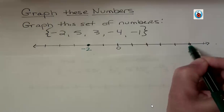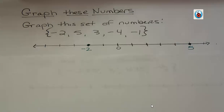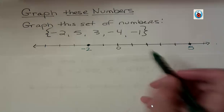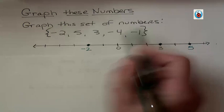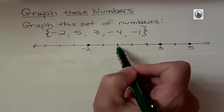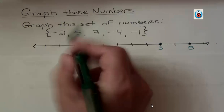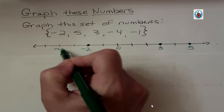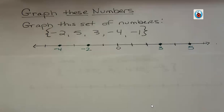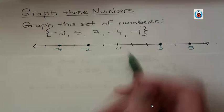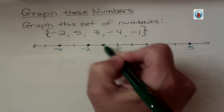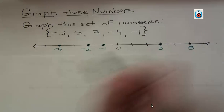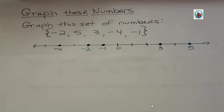And to graph it, we actually put a coordinate point there. Three is one, two, three. This is negative four from zero: one, two, three, four. Remember, all the negatives are to the left and all the positives are to the right. And then negative one from zero, we're going to go backwards one. So those are all those points plotted on a number line.